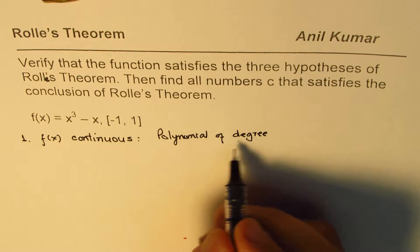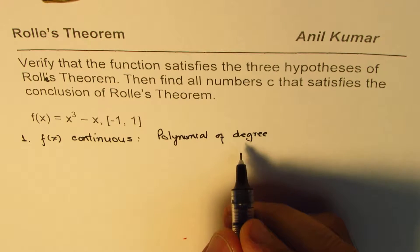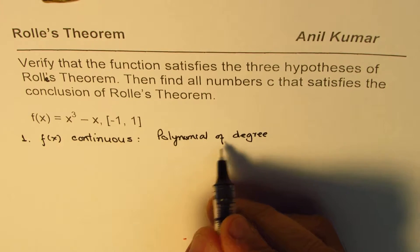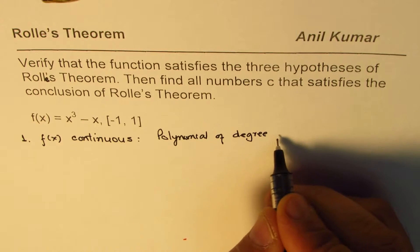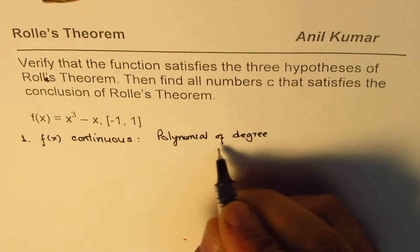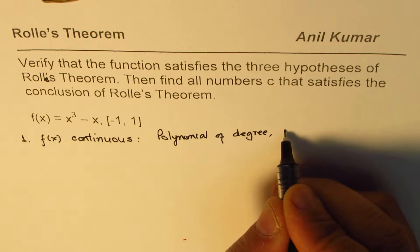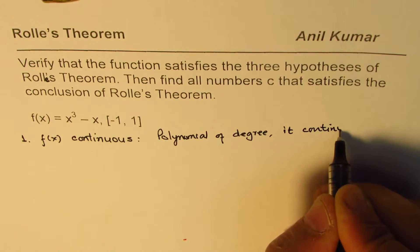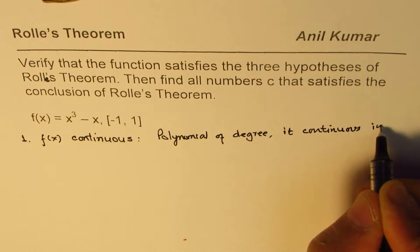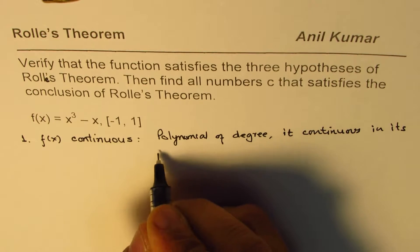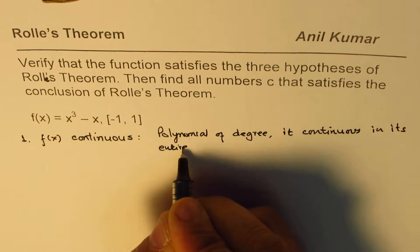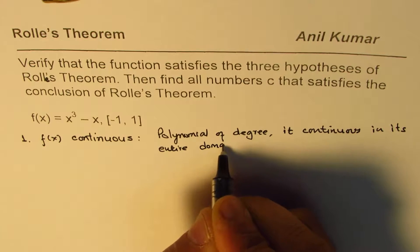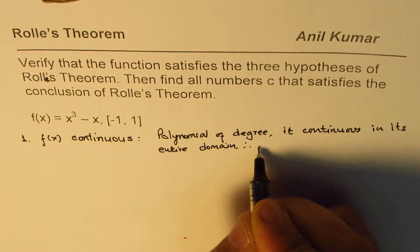Since it is a polynomial, we know all polynomials, whether it is degree 3 or whatever, all polynomials are continuous in their domain. So polynomial of degree 3 is continuous in its entire domain.